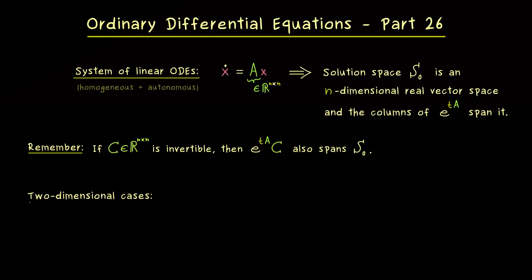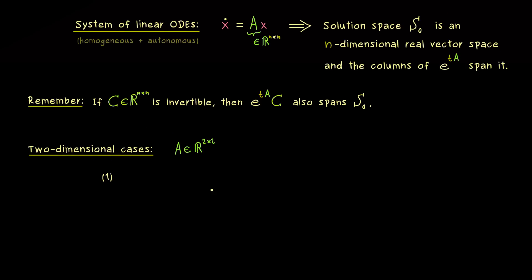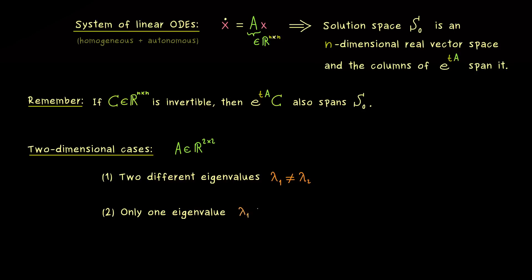From now on we consider a 2-times-2 matrix A. If you've understood what can happen in the two-dimensional case, you also know what can happen in the n-dimensional case. The two-dimensional case is particularly tidy, which we can immediately see in the characteristic polynomial — it's a quadratic polynomial with two zeros that could be different or coincide. These give us two cases: either two different eigenvalues or only one. These two cases already result in different matrix exponentials, but we can subclassify them further — for example, in the first case we could have real or complex eigenvalues.